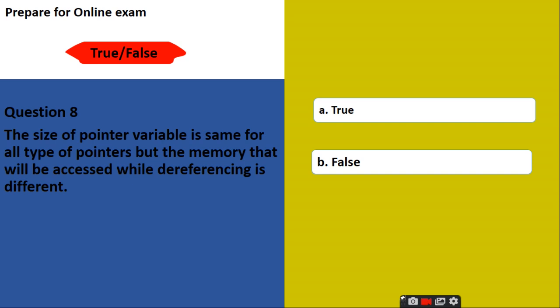The size of pointer variable is same for all type of pointers, but the memory that will be accessed while dereferencing is different, true or false. See, size of pointer variable is same for all type of pointers, but the memory that will be accessed while dereferencing is different. Yes, it is correct. This is true.